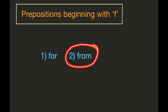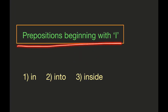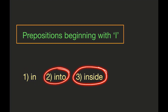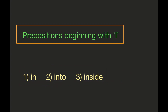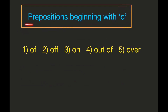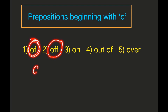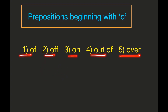Prepositions beginning with F: we have two — 'for' and 'from.' These two prepositions are frequently used in the English language. Prepositions beginning with I: we have three — 'in,' 'into,' and 'inside.' These are very, very important prepositions. Prepositions beginning with O: we have five — 'of,' 'off,' 'on,' 'out of,' and 'over.' These five prepositions are very, very important — remember them.